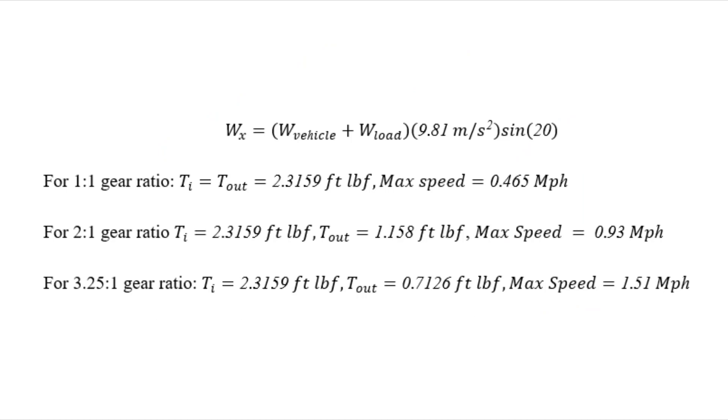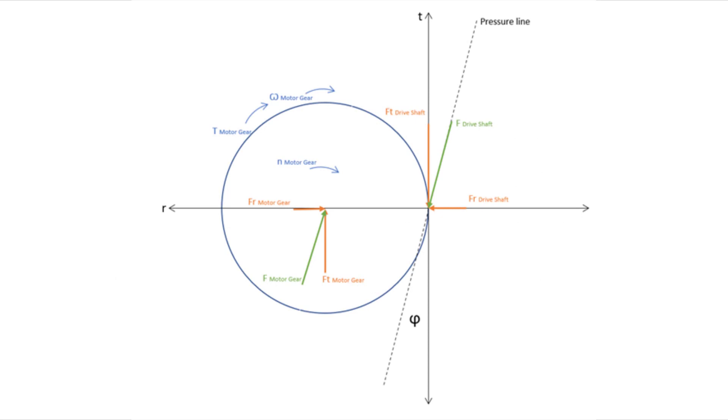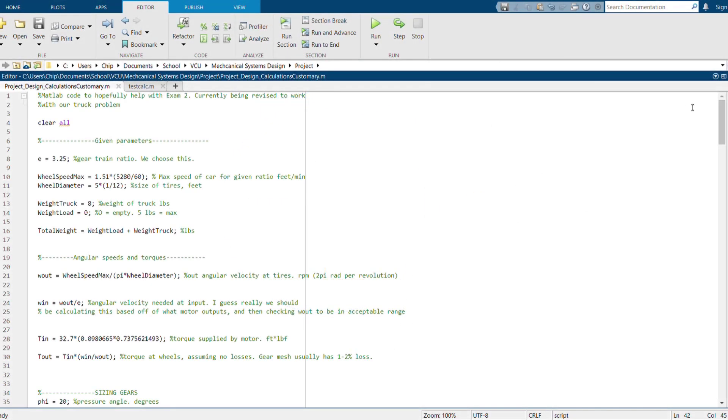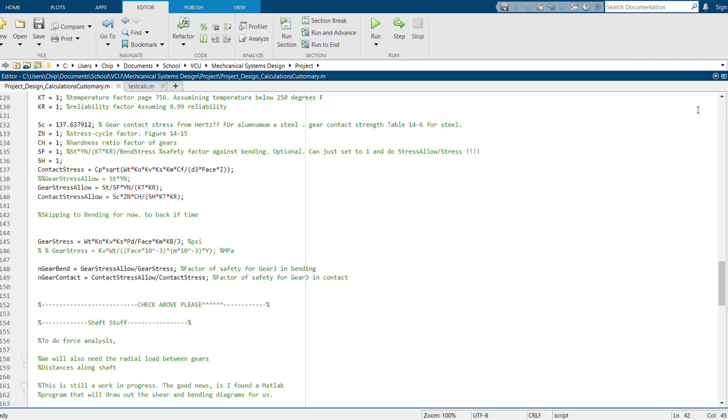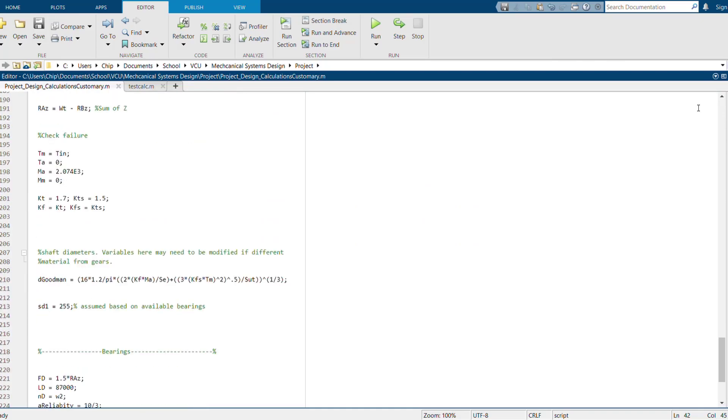The swap gear was tested using statics calculations, before writing MATLAB code to test a range of variables to fine-tune the achievable speed and torque of the toy. Then MATLAB was used to size the gears using AGMA standards. The factor of safety for all gear combinations was found to be at least four.